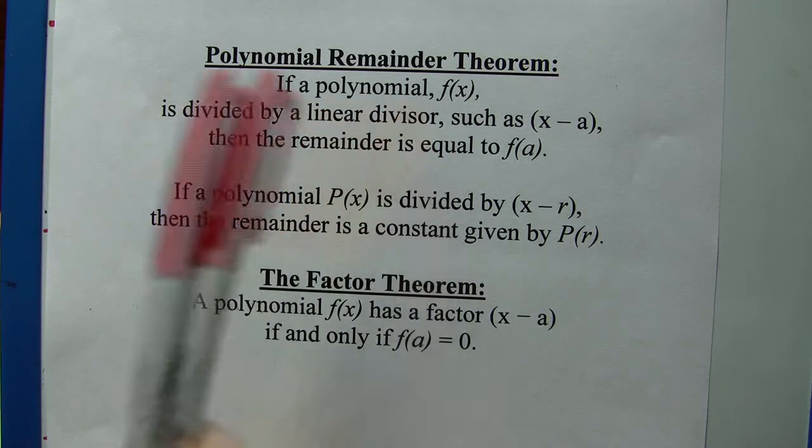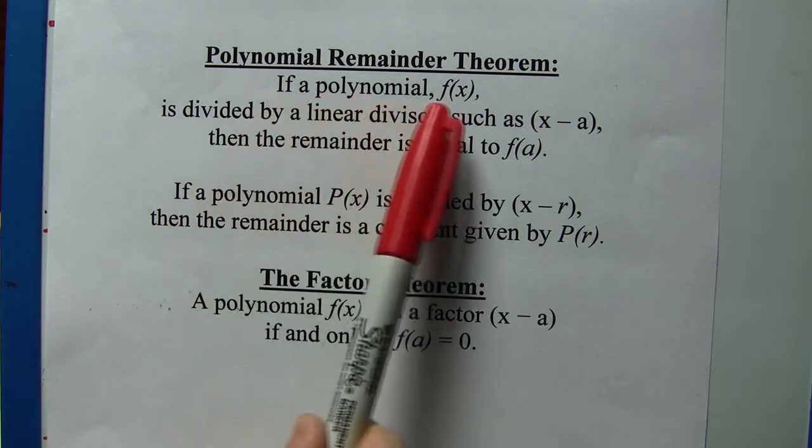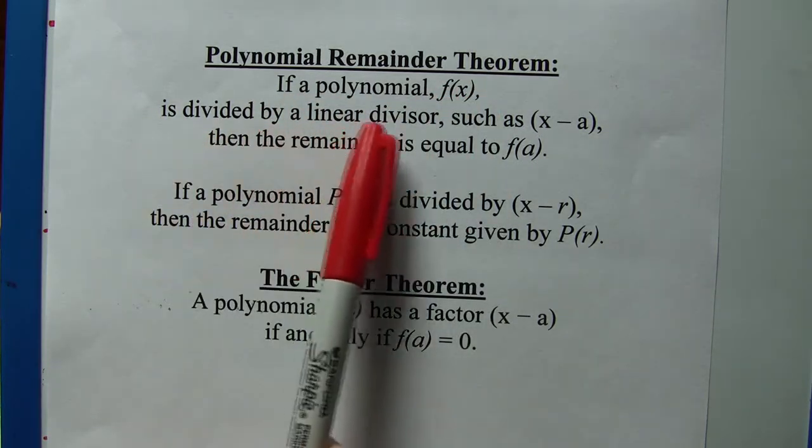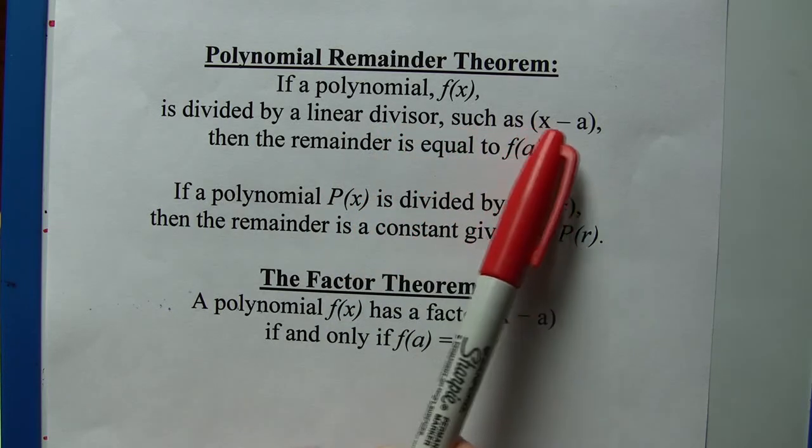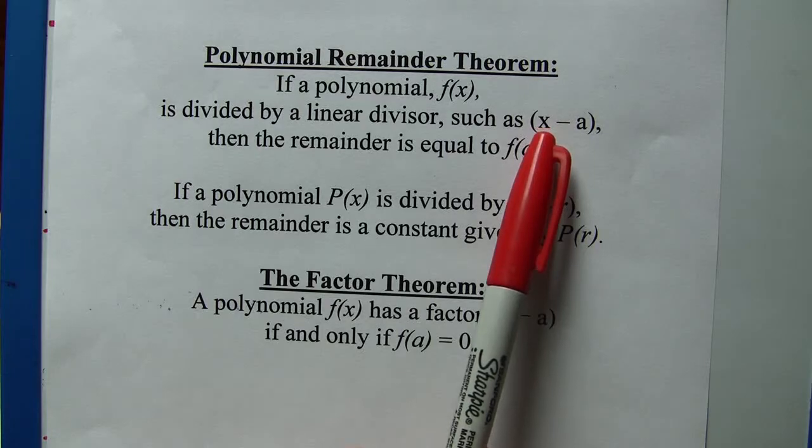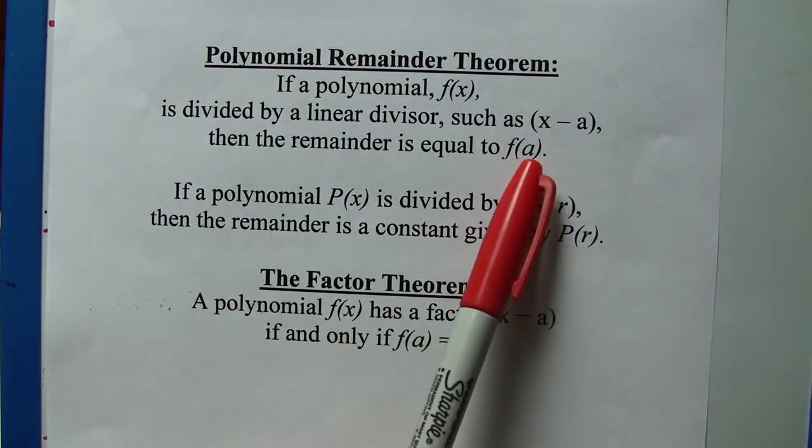The remainder theorem basically says if a polynomial f(x), any polynomial, is divided by a linear divisor such as (x - a), where linear means this exponent on the x is 1, then the remainder is equal to f(a).